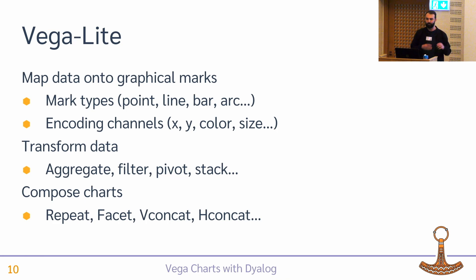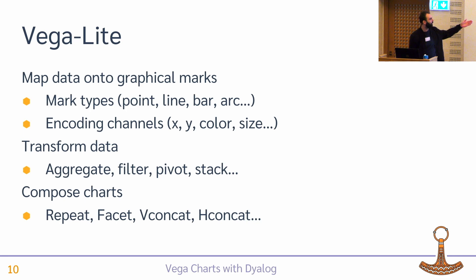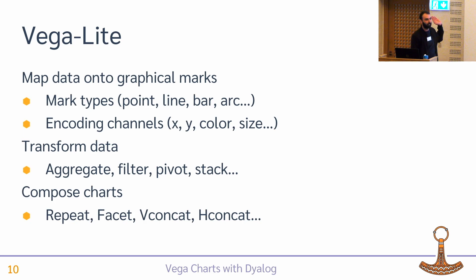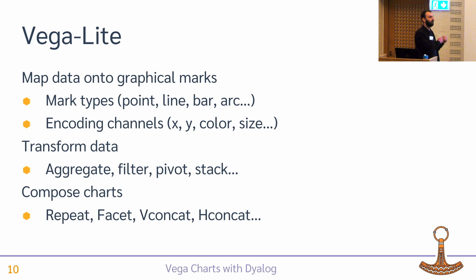Vega-Lite is very much the same idea, just at a higher level. You specify what type of mark you want and some properties thereof. You specify encoding channels — for instance, I want this column to be my position on the x-axis, I want this column to control the color. The grammar of graphics and its implementations also talk about data transformation; for example, if you want a histogram you might aggregate on some column with count. There are also functions for composing charts and applying the same specification to different subsets of your data.